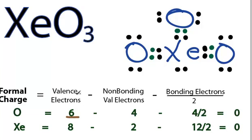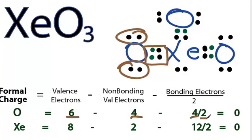So let's calculate the formal charges for this new XeO3 Lewis structure. Oxygen, we have 6 valence electrons looking at the periodic table. Non-bonding, those right there aren't involved in bonds, we have 4. And bonding, we have those 4, which we divide by 2. 6 minus 4 minus 2 is 0.